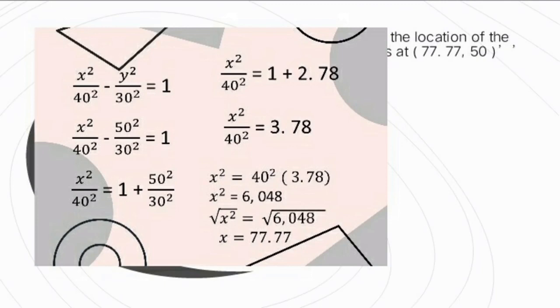When we already get the value of A, B, and C, we substitute the value of A and B in the equation X squared over A squared minus Y squared over B squared equals 1. That's why we have X squared over 40 squared minus Y squared over 30 squared equals 1. Y is given earlier and that is 50. So X squared over 40 squared minus 50 squared over 30 squared equals 1. We need to get the value of X. We transpose negative 50 squared over 30 squared to the other side, and when we transpose a negative number, it becomes positive.